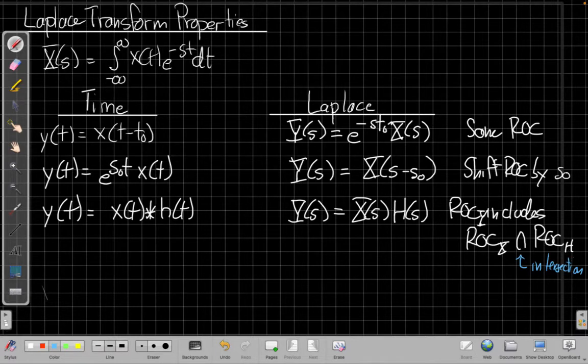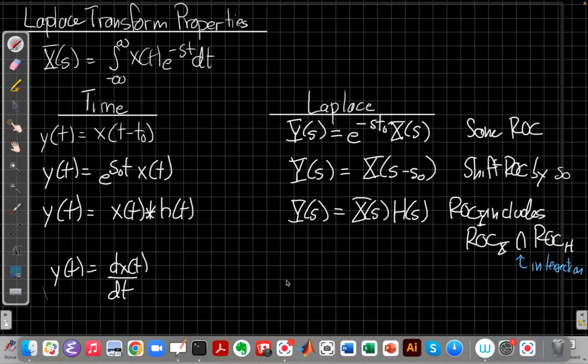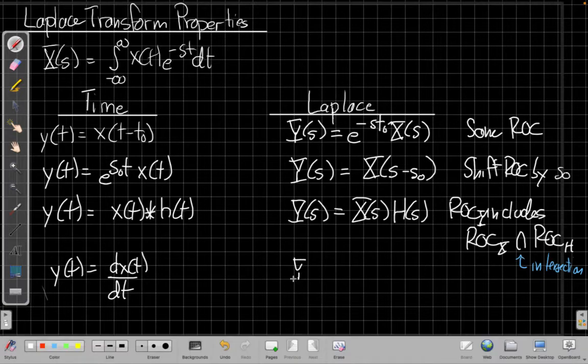What about another property we've seen a bunch? What happens if I take a derivative in time? Well, taking a derivative in time is multiplying by s in frequency, right? Just as we saw for Fourier, it was multiplying by j omega. Well, we know if we want to find Fourier from Laplace, we have to set s equal to j omega. So it needs to be something that gives us the same thing back.